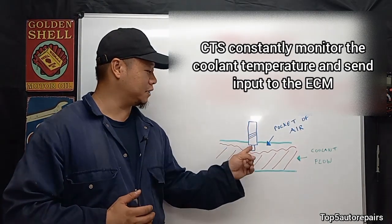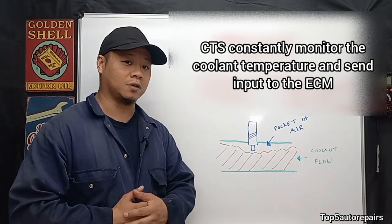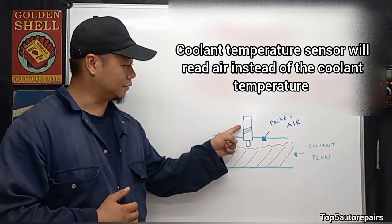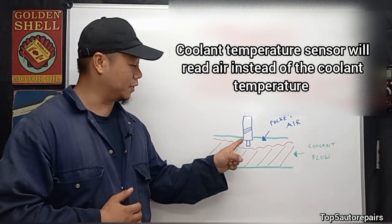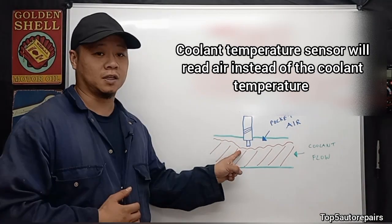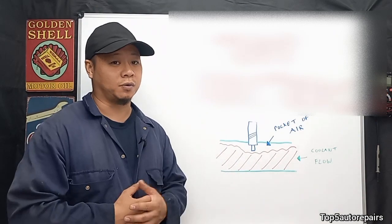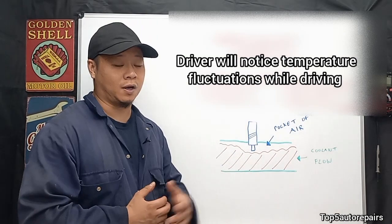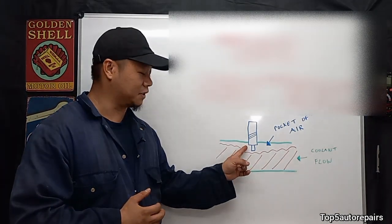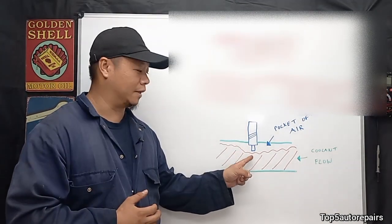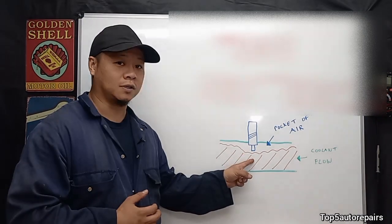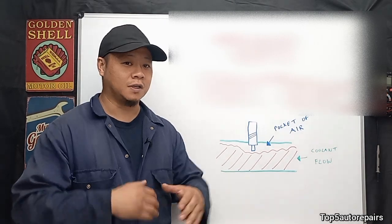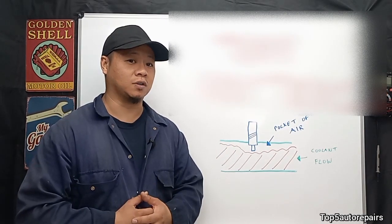The cooling temperature sensor should always be reading the coolant temperature. However, if you have a pocket of air, sometimes the cooling temperature sensor could be reading the pocket of air instead of the coolant, and this can throw the reading off. When you're driving, the coolant will be constantly moving around, so the temperature sensor can be reading the coolant and then the pocket of air, back to the coolant and back to the pocket of air. This is why you will always have that temperature fluctuation while driving.